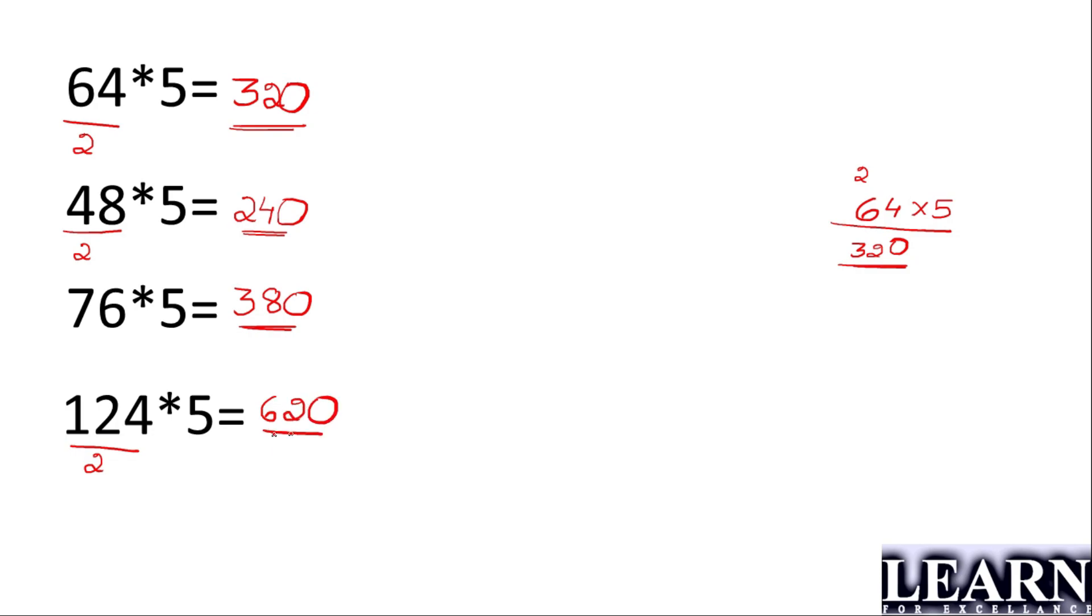Now it's very easy, right? Whenever we multiply any number by 5, instead of multiplying by 5, we divide it by 2 and add one 0 to it. It is nothing but multiplying by 10 to get the final number.